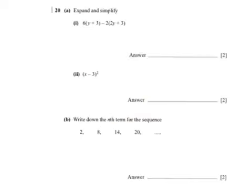Question 20, we are asked to expand the two brackets and then simplify our answer. So taking the first bracket, we get 6y plus 18 because each term inside the bracket is multiplied by 6. Then in the second set of brackets, we have minus 2 times 2y, which gives us minus 4y. And minus 2 times 3 gives us minus 6.